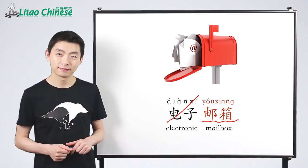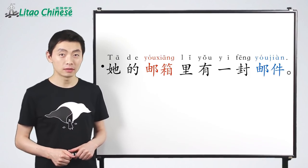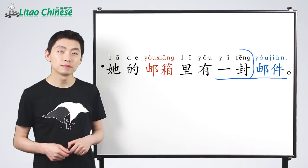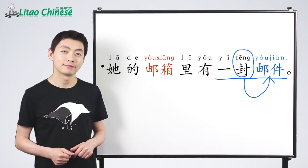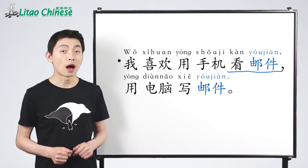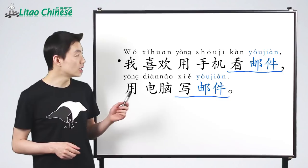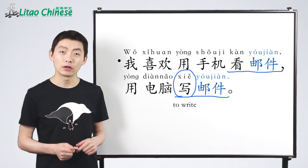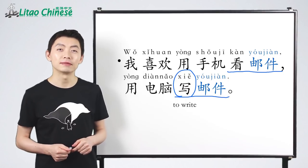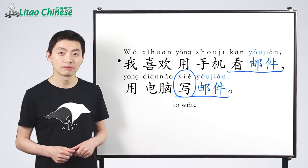You can also only say 邮箱 for email box if the context is clear. 好的，我们看两个句子。第一个，他的邮箱里有一封邮件。用电脑写邮件。我喜欢用手机看邮件，用电脑写邮件。写意思是to write，写邮件，to write email。当然，你也可以用手机写邮件，可是手机常常很小，所以用手机写邮件不太方便。